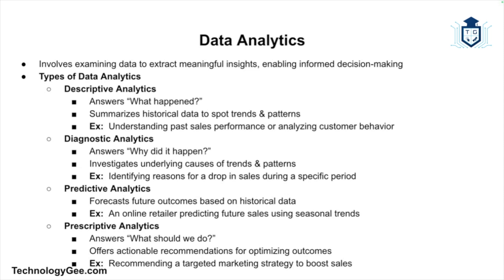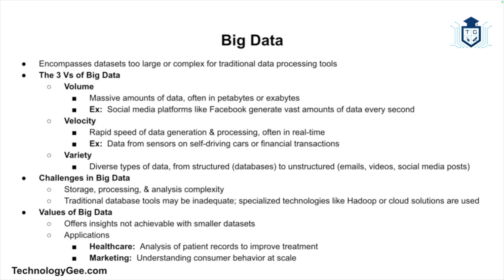Big data refers to data sets that are so large or complex that traditional data processing tools cannot handle them. Big data is often described in terms of the three V's. The first V is volume — the sheer amount of data being generated, often measured in petabytes or exabytes. For example, social media platforms like Facebook generate enormous volumes of data every second. The second V is velocity — the speed at which data is generated and processed, such as data from sensors on self-driving cars or financial market transactions.